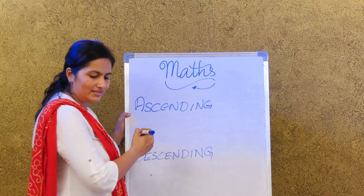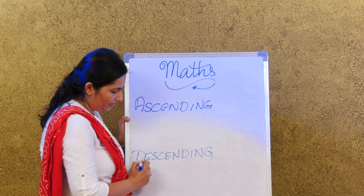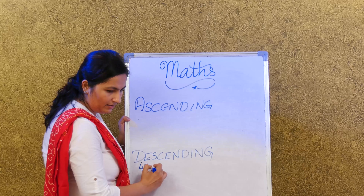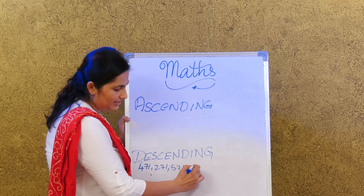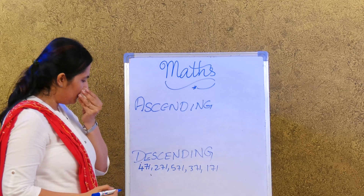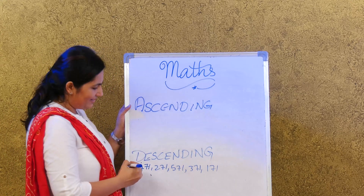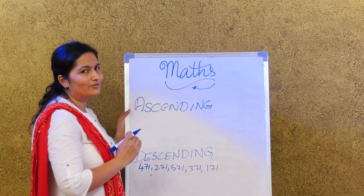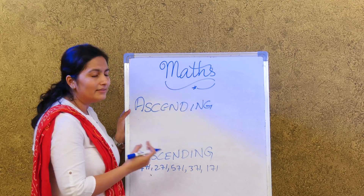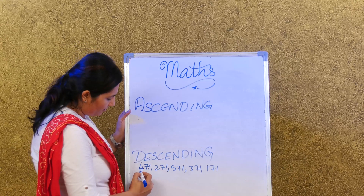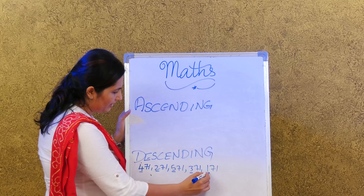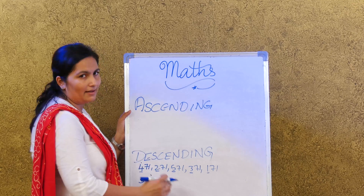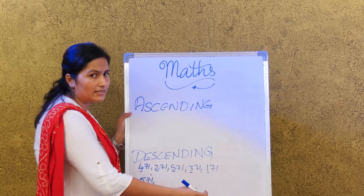Descending order is going down the stairs — from greatest to smallest, the exact opposite of ascending. The numbers given are 471, 271, 571, 371, and 171. Interesting — they're all in the 71 group! All are three-digit numbers, so we look at the hundreds: 5 is the highest, so 571 is the greatest.